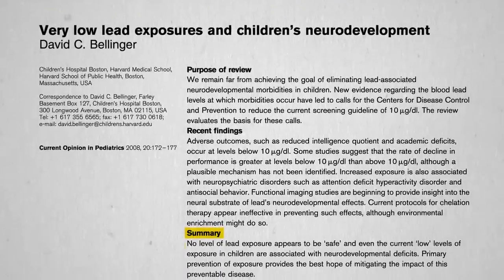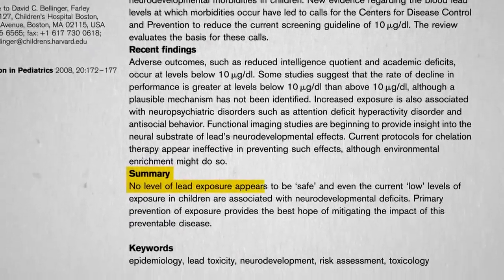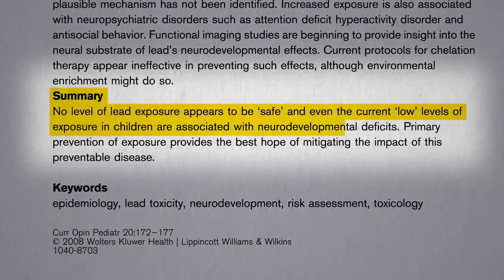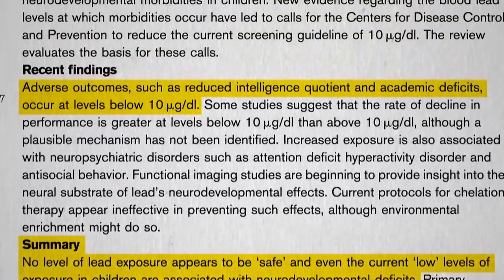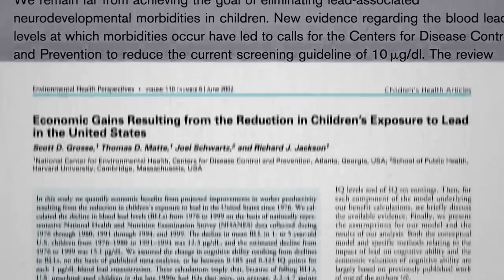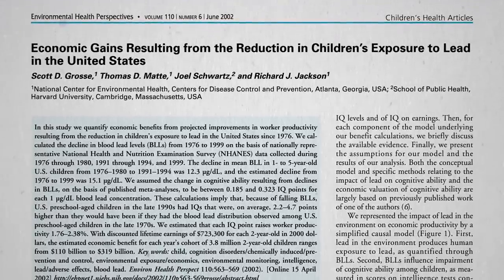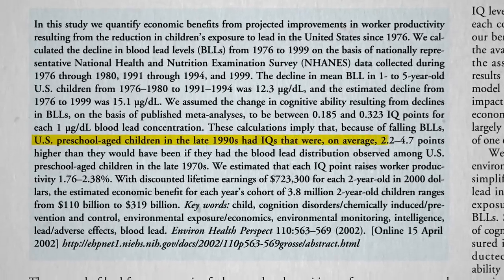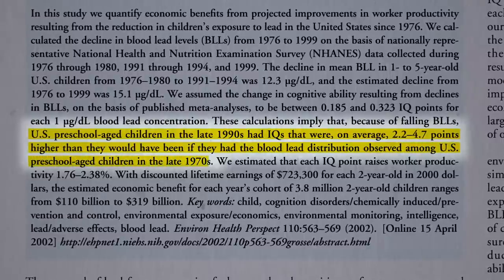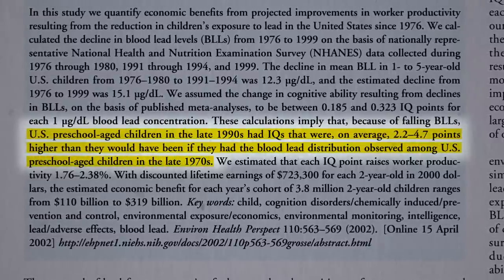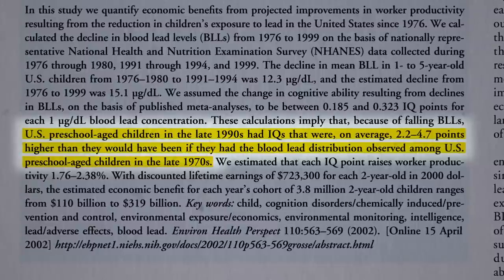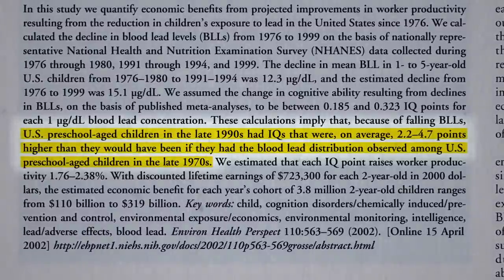The bottom line is that no level of lead exposure appears to be safe, and even current so-called low levels of exposure in children are associated with neurodevelopmental deficits, including reduced IQ. Thanks to falling blood lead levels starting in the 70s, preschoolers born in the 90s were about two to five IQ points smarter than kids born before 1976 — a small part of that may be them not suffering as much lead-induced brain damage.